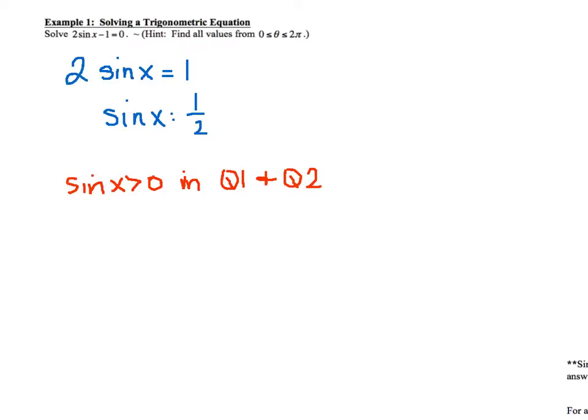So if you draw a triangle in quadrant 1, it looks something like this. And your sine value is 1 half. So if this is 1 half, that must mean that this x value here, your angle, well, that x is going to be equal to pi over 6.